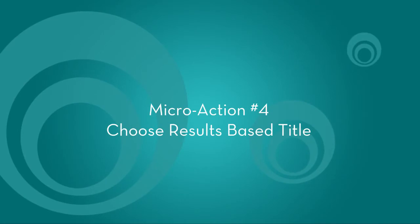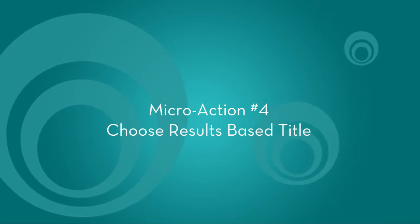Your micro action today is to choose a results-based, clearly articulated title for your paid program. Here are some tips to set you up for success. First, make it sound easy — not like a lot of work. I call this the magic pill approach. You want people to look at the title and immediately feel like it would be easy to get the result if they attended. Try to avoid using ING in your titles. For example, 'Magnetize Your Audience' sounds easier than 'Magnetizing Your Audience.' The ING seems to suggest more work, so keep it easy.